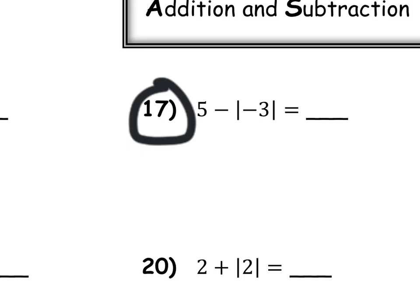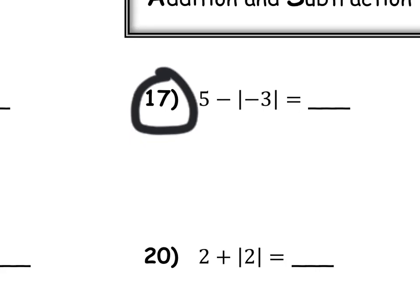We have 5 minus the absolute value of negative 3. Since 5 isn't in absolute values, it's not going to change at all. We have this minus, but then the absolute value of negative 3 is positive 3. So this is really like 5 minus 3, and 5 minus 3 is 2.